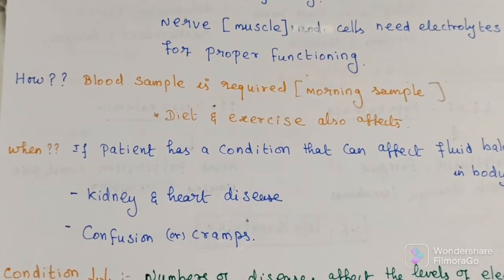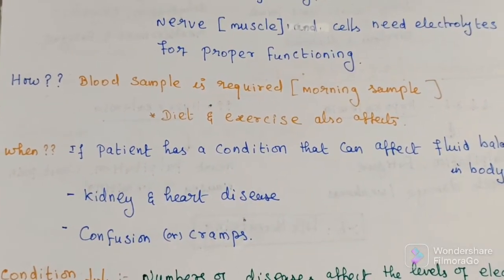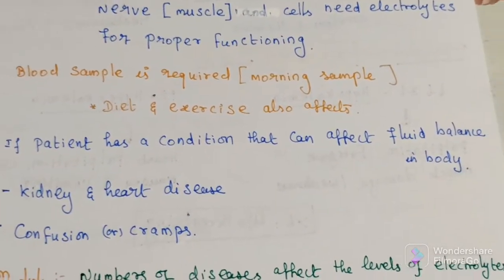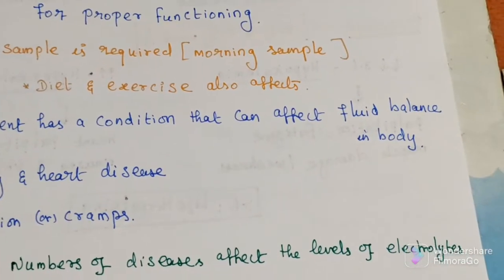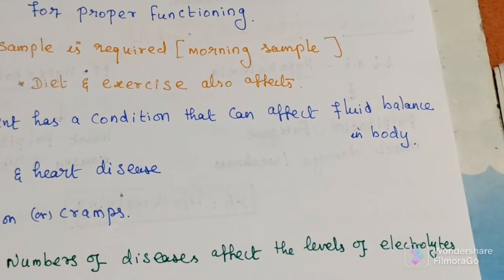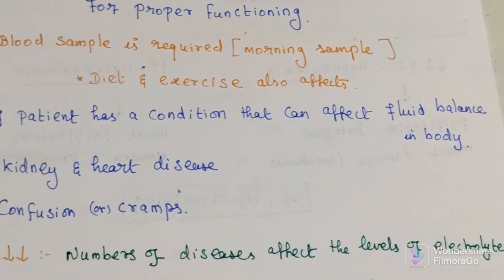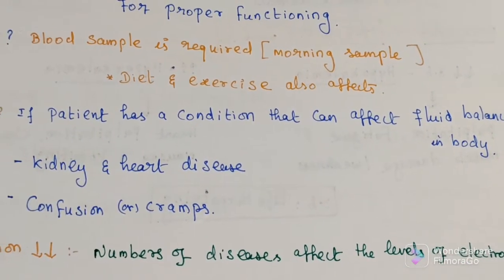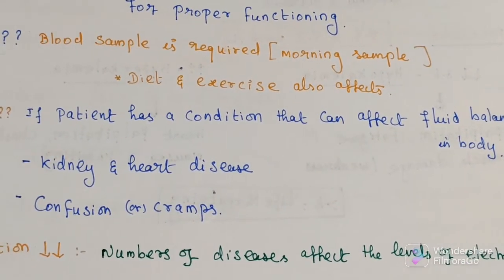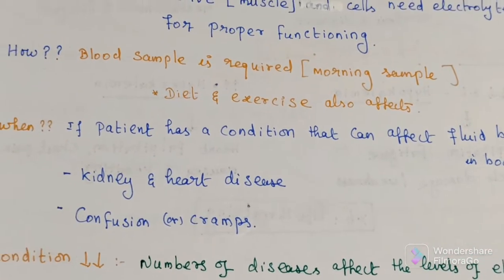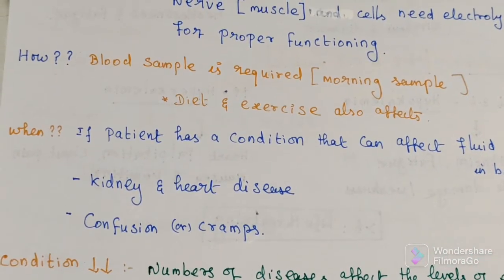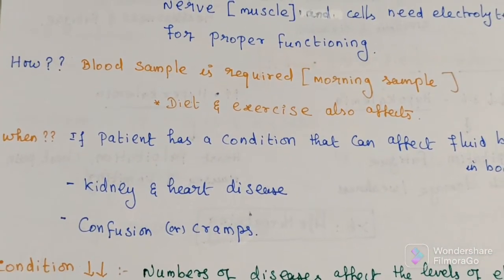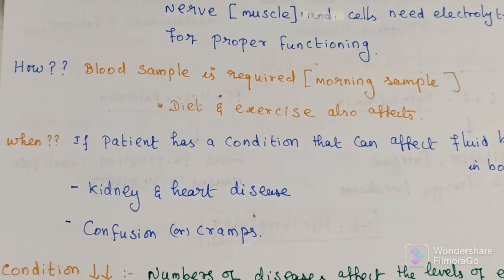If the patient has symptoms like confusion or cramps, then also this test can be asked for. So the conditions include fluid loss, vomiting, kidney and heart disease, confusion, and cramps.